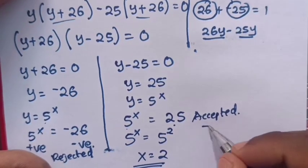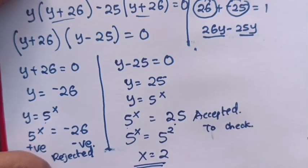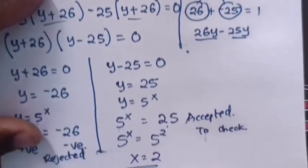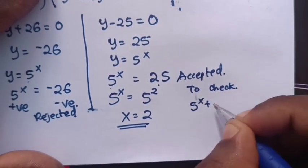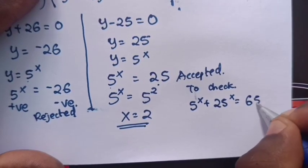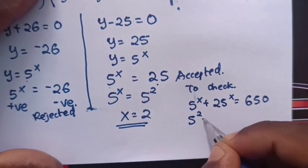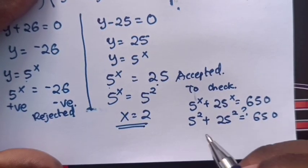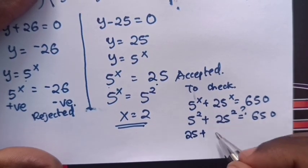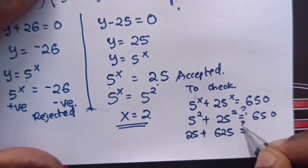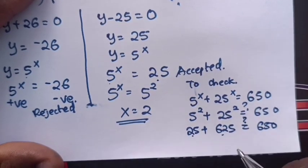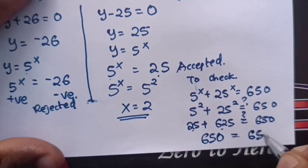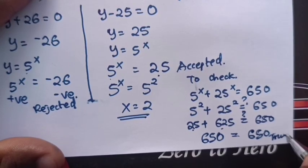Let's check if x = 2 is correct. From 5^x + 25^x = 650, we substitute x = 2: 5² + 25² = 25 + 625 = 650. So 25 + 625 = 650, which equals 650. It's confirmed the value of x is 2.